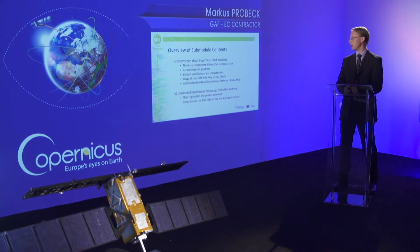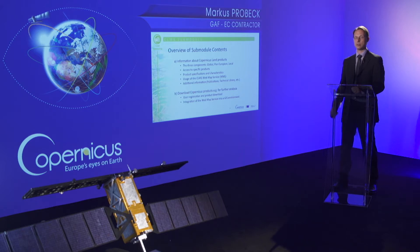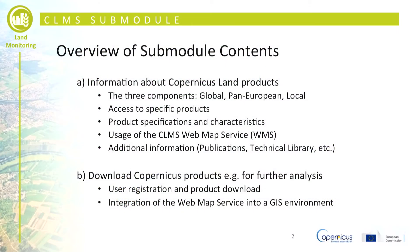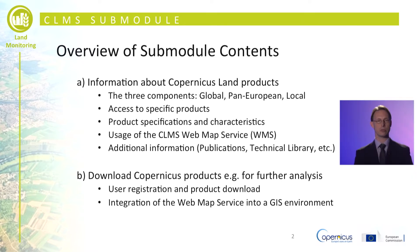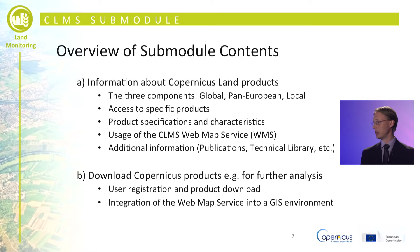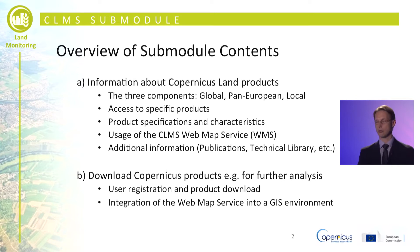The presentation is structured as follows. It will first provide information about the three basic components of the Copernicus land monitoring service: the global, the continental (also called pan-European) component, and the local component, which all have their specific characteristics, spatial resolutions and purposes. It will also give details on product specifications and how to access the data via viewing services, download services, and web mapping services for use in geographic information systems.